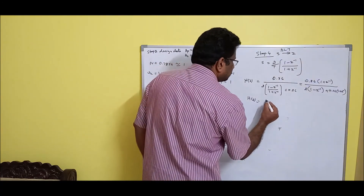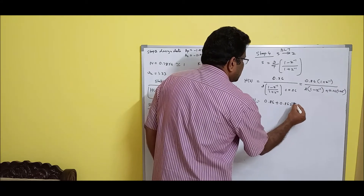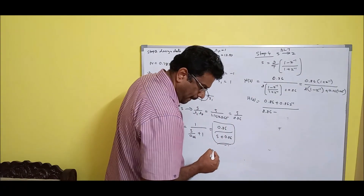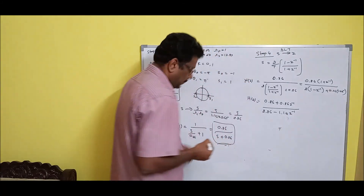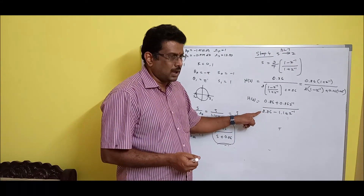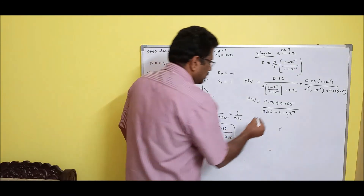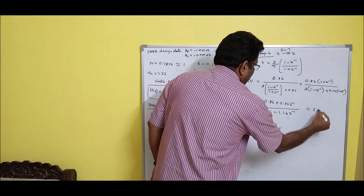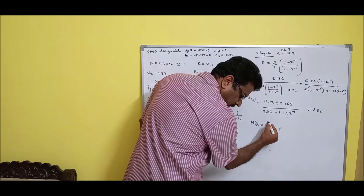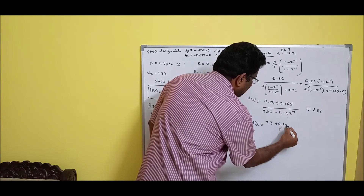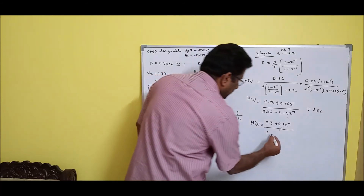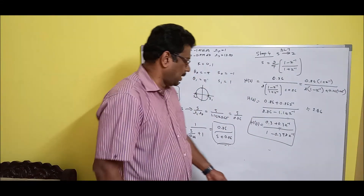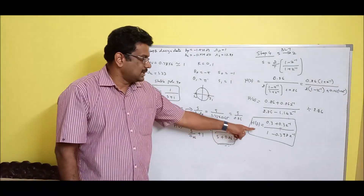Expanding: numerator = 0.86 + 0.86z⁻¹, denominator = 2.86 - 1.14z⁻¹. Since the denominator's leading coefficient must be 1, divide everything by 2.86. Final answer: H(z) = (0.3 + 0.3z⁻¹) / (1 - 0.398z⁻¹). This is the digital filter designed using the bilinear transform.